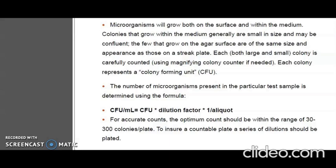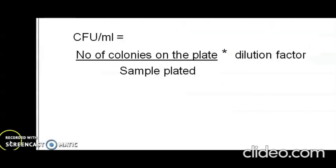For accurate counts, the optimum count should be within the range of 30 to 300 colonies per plate. To ensure a countable plate, a series of dilutions should be plated. Some advantages of the plate count method are that it is used for estimation of bacterial populations in milk, water, food, and other materials, and it counts only living cells. A disadvantage is that since the suspension may contain different kinds of microbial species, not all of them will grow on one medium.